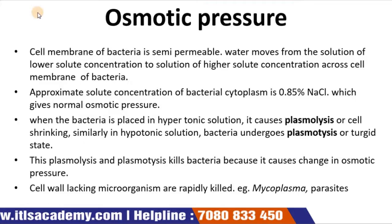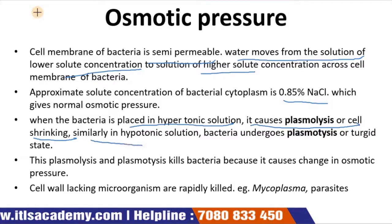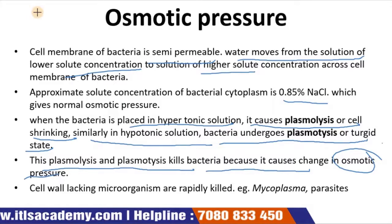Osmotic pressure: the cell membrane of bacteria is semi-permeable. Water moves from a solution of lower solute concentration to one of higher solute concentration across the cell membrane. The approximate solute concentration of bacterial cytoplasm is 0.85% NaCl, giving normal osmotic pressure. When bacteria are placed in a hypertonic solution, it causes plasmolysis and cell shrinkage. In a hypotonic solution, bacteria undergo turgor. Plasmolysis kills bacteria by causing changes in osmotic pressure, and wall-lacking microorganisms such as Mycoplasma and parasites are rapidly killed.